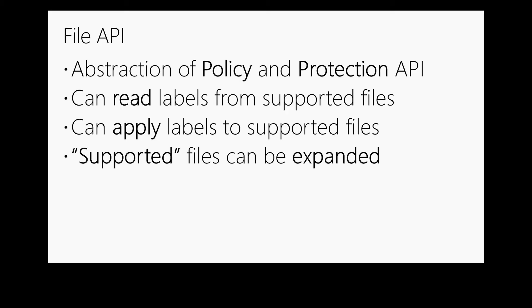Finally, there's the file API, which is what most of our partners are going to use, at least in the beginning. The file API provides an abstraction of both the policy and the protection API — it exposes the labels available to your organization, and allows you to apply and read labels on documents. We've done a lot of the work around well-known file formats: Office files, PDF files, P files. You can essentially pass in a file and a label ID, and we'll do all the work — applying metadata, content marking, and RMS or AIP protection.